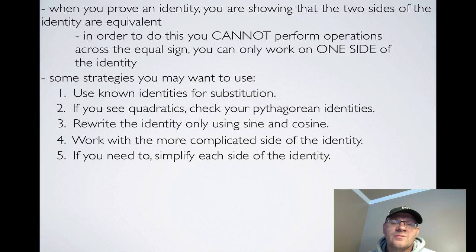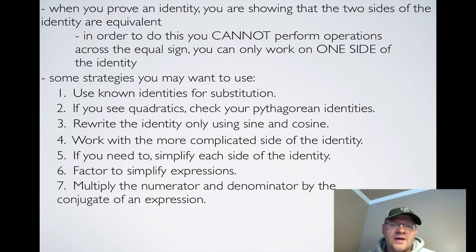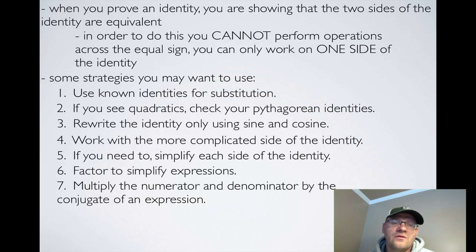Five: if you need to, you could simplify each side of the identity, but remember you can't perform operations across the equal sign. Six: you need to know how to factor so you can simplify expressions. Seven: you need to know how to multiply the numerator and denominator by the conjugate of an expression. We'll use all of these strategies in the next couple of examples.